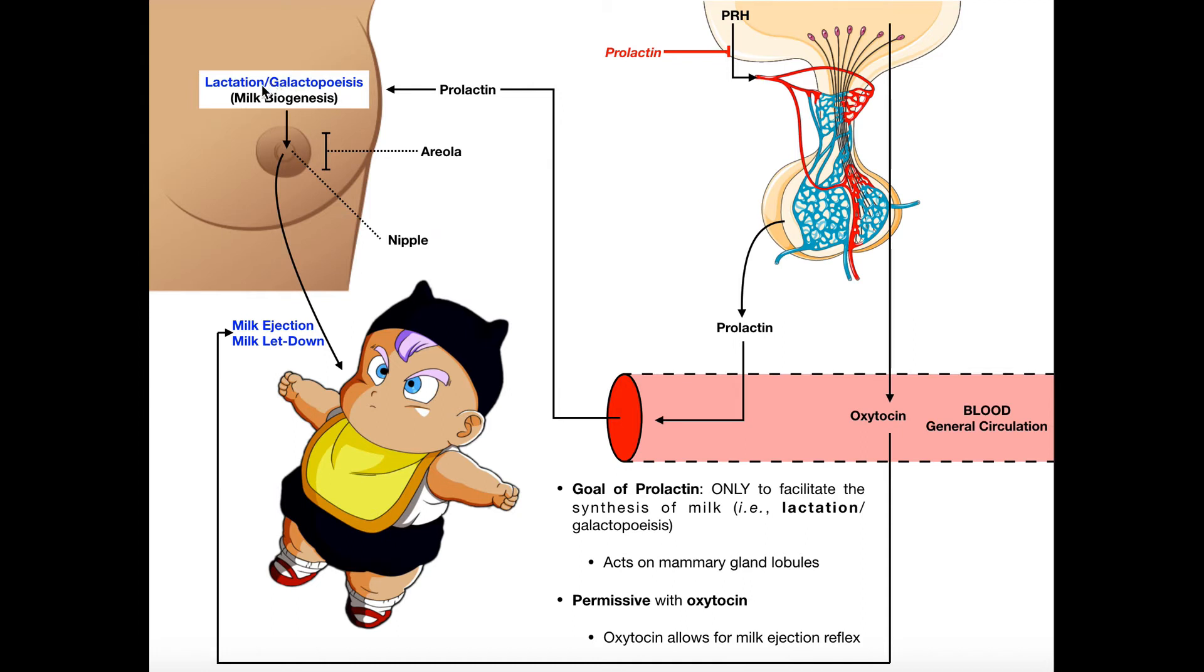And this process where milk is being made initially is called lactation. So at some point, the woman starts making milk in the breast tissue. That process is called lactation.